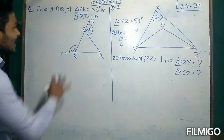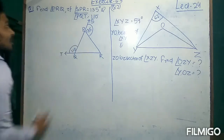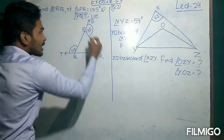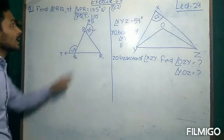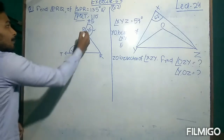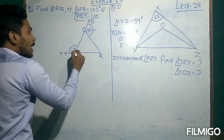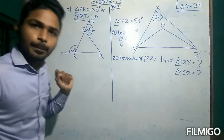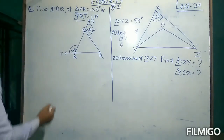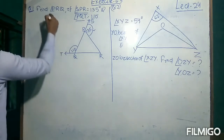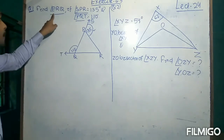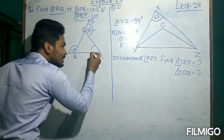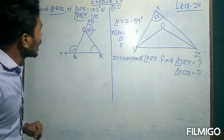The first question is given a figure in which angle SPR is 135 degrees and angle PQT is 110 degrees. These two are exterior angles of triangle PQR. From the following data, you have to find the value of angle PRQ. How can we find it?